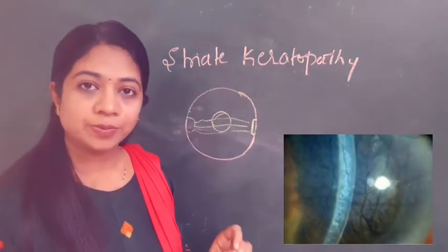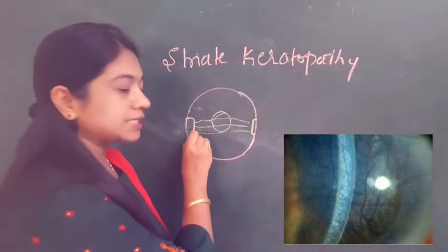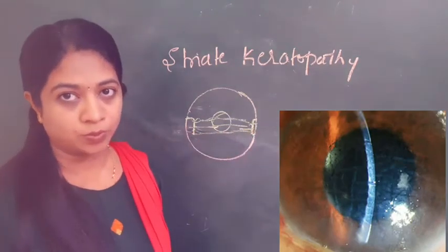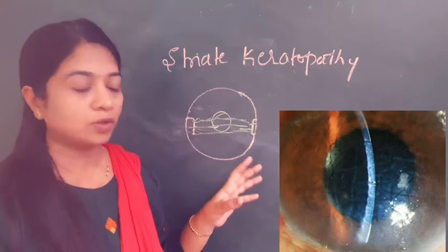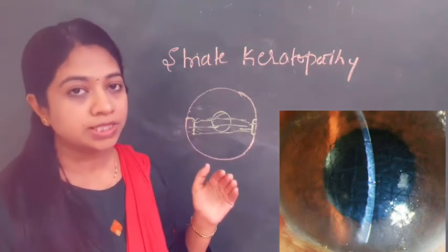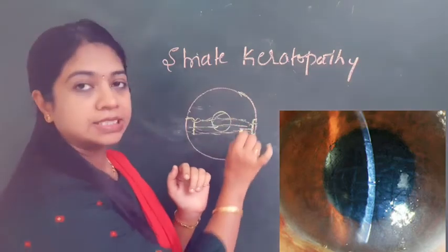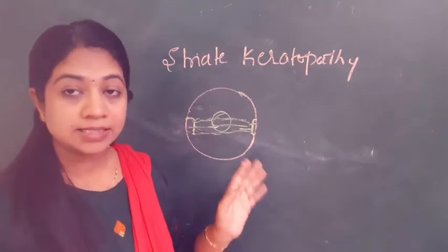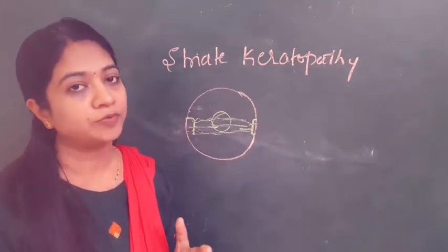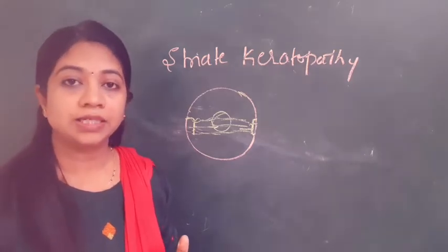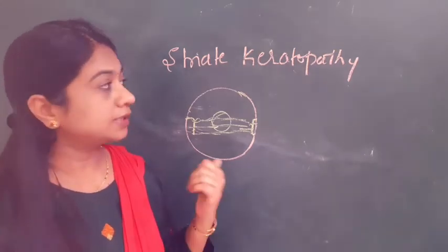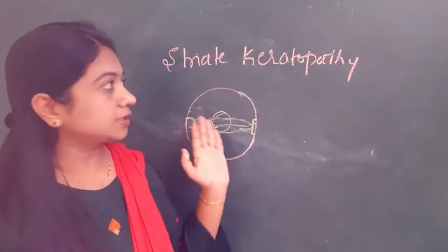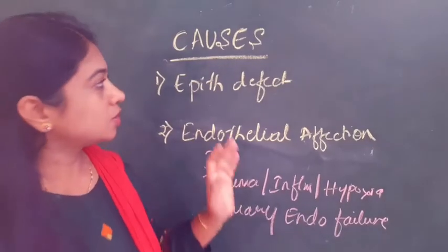Another term frequently used when describing corneal edema is striate keratopathy, usually seen in post-operative patients where corneal sections are made. You see grey lines coming from the corneal sections moving across the globe. This occurs because of slight folding of the cornea, especially the Descemet's membrane and the posterior lamella of the stroma. To summarize the signs: examine epithelial intactness with fluorescein staining, look for bullae, check for Descemet's membrane folds, examine for guttae, and note any striate keratopathy.